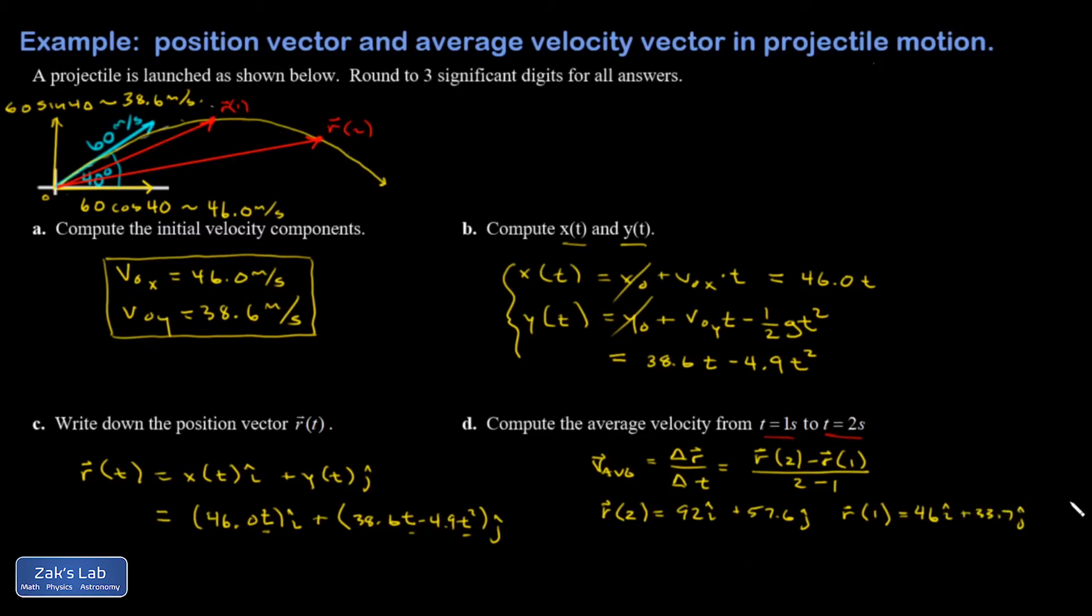All right, so both of these position vectors point up into the right, which makes a lot of sense considering the context of the problem. So then I have to take the difference, which means I go 92 minus 46 i hat, and that's going to be my delta r, so I have 46 i hat left over. And then in my y coordinate I have 57.6 minus 33.7, which is 23.9 j hat.